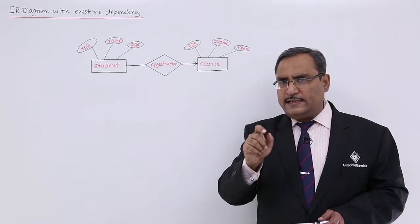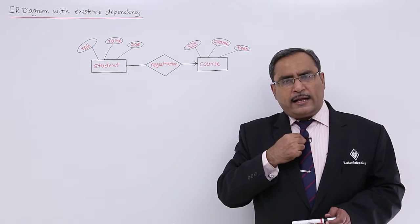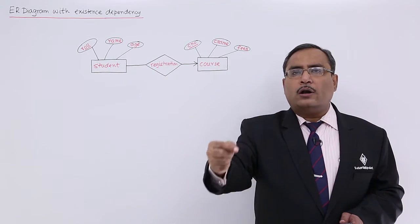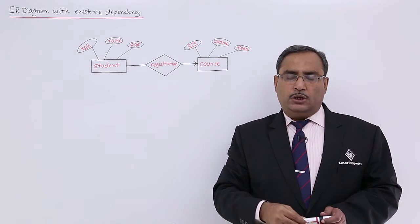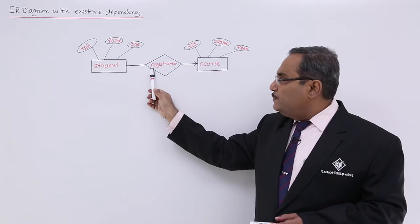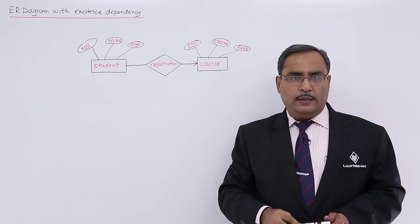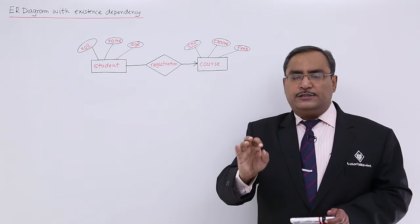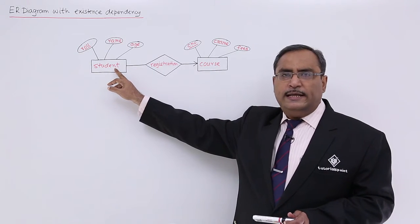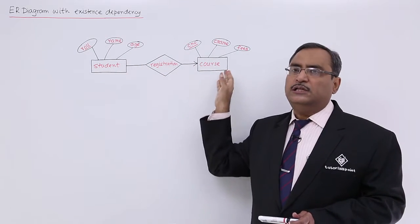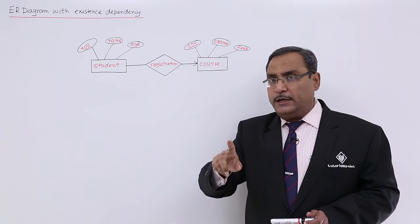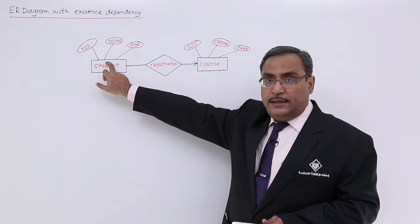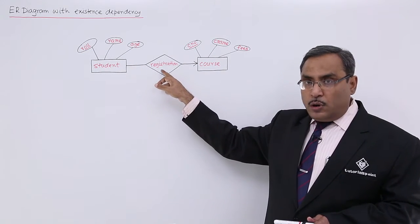Now let us give emphasis on the term existence dependency. I cannot be a student of a certain college until and unless I do the registration against one of the courses which the college is offering. That means all the student roll numbers must have entries in the roll number column under the registration, because you cannot find a single student existing in this entity who has not done any registration in any one of the courses. So a student will exist only if the student roll number is existing under the roll number column within the registration.